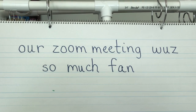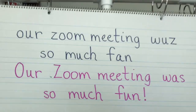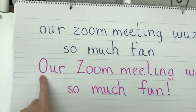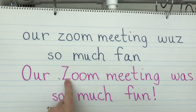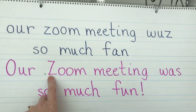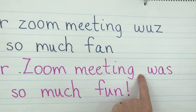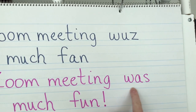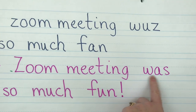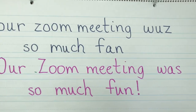The corrected sentence is in pink. 'Our' was spelled correctly — it's a sight word — but it needed a capital O since it's the beginning of a sentence. 'Zoom' is capitalized because that's the name of the company or software we were using. 'Meeting' was spelled correctly. 'Was' — that was a sight word we did in school. It looks like it should be spelled differently, but it is W-A-S.